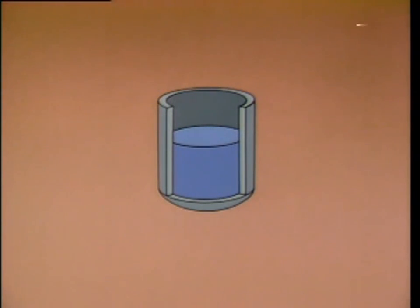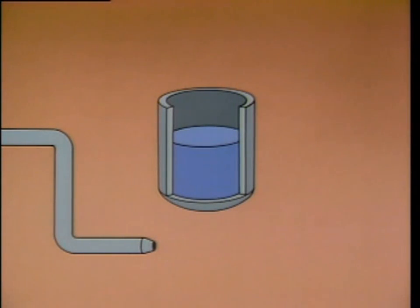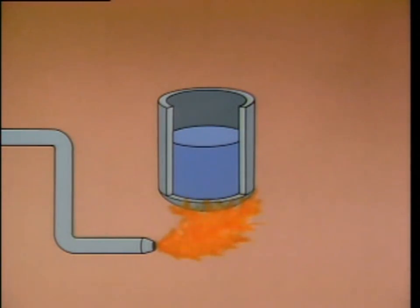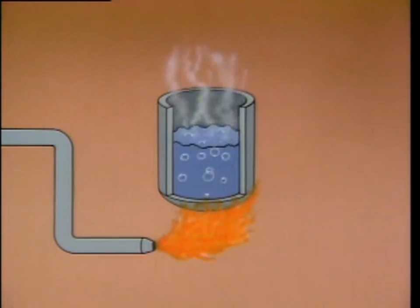We'll also add a pipe to provide a continuous supply of fuel to the combustion area — that is, the area beneath the shell. Heat from the flame satisfies the second requirement for steam production. As the shell heats up, heat is transferred from the shell to the water, and the water boils, producing steam.